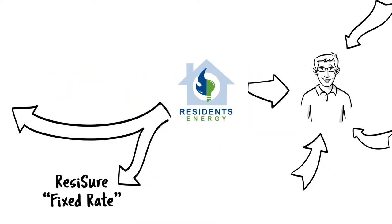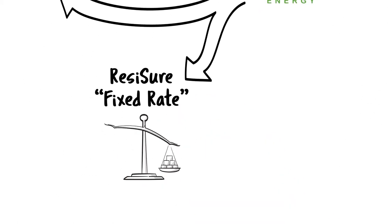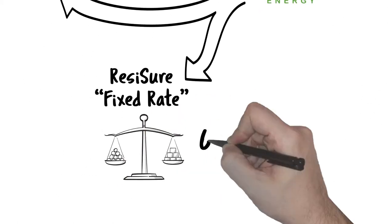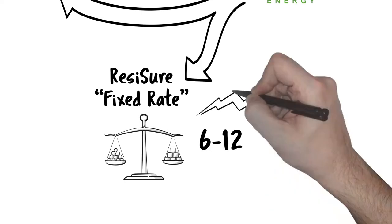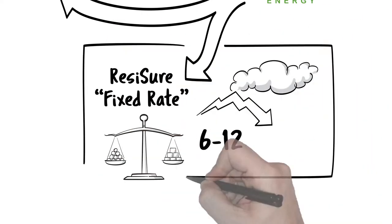ResiSure is a fixed rate plan. The cost per unit of energy supplied remains the same for a term like 6 or 12 billing cycles. While no one can predict with certainty whether the utility's rates will rise or fall over the course of the year and there is no guarantee of savings versus the price to compare, ResiSure is a way for Ray to avoid market volatility by locking in his rate.